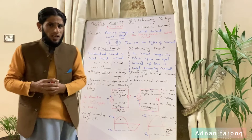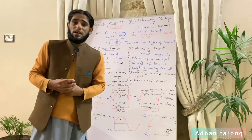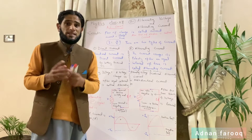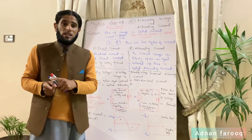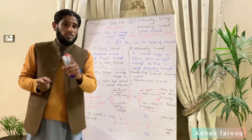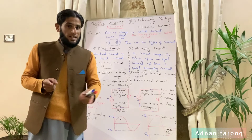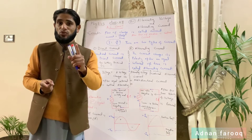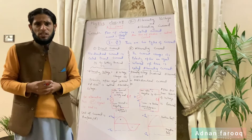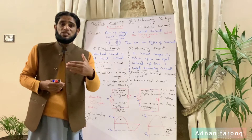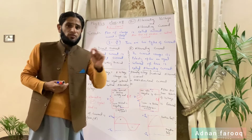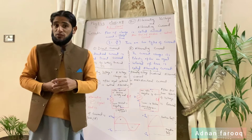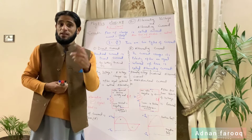Conductor کے against insulator ہوتا ہے — ایسا material جس میں سے charges easily flow نہ کر سکیں، یعنی current گزر نہ سکے، اسے insulator کہتے ہیں۔ Conductor میں charge easily flow کر سکتا ہے، جب charge نے flow کیا تو current بنا۔